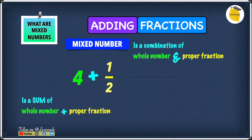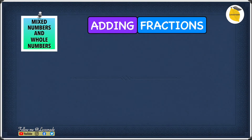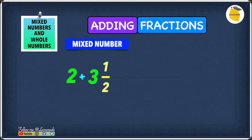Since we now know what mixing numbers are, let's move on to the questions. Now let's have a look at adding mixing numbers and whole numbers. The example we have is 2 plus 3 1 over 2, where 2 is the whole number and 3 1 over 2 is the mixing number.